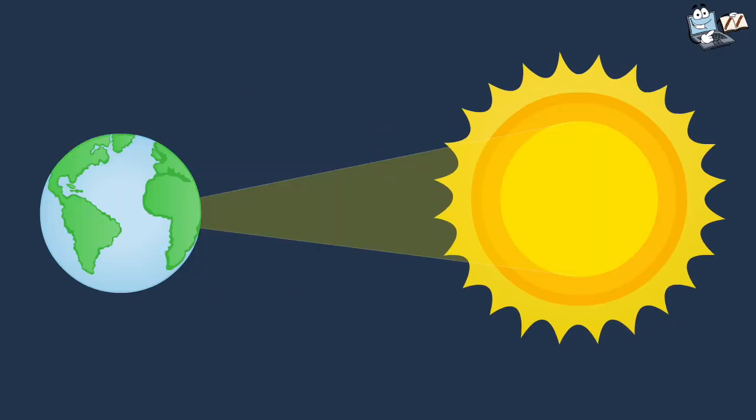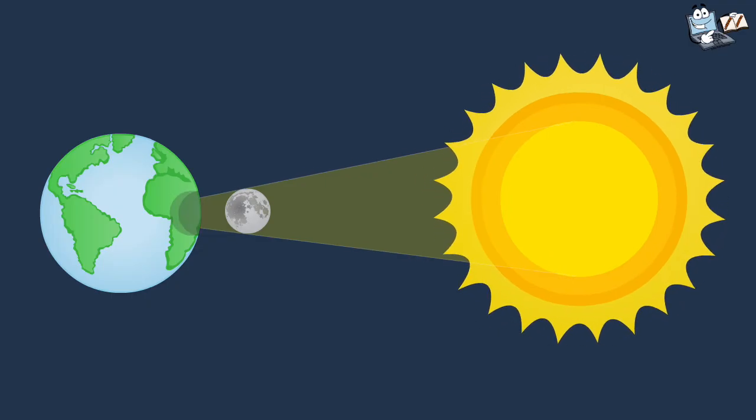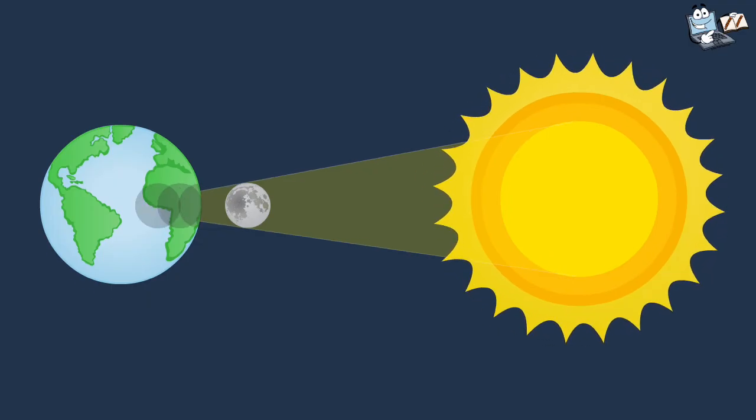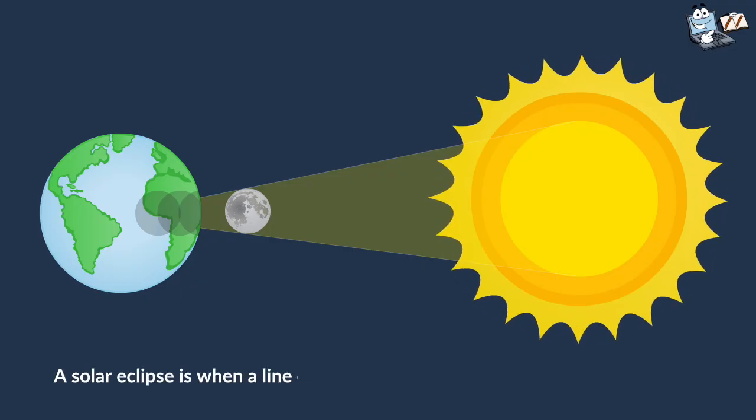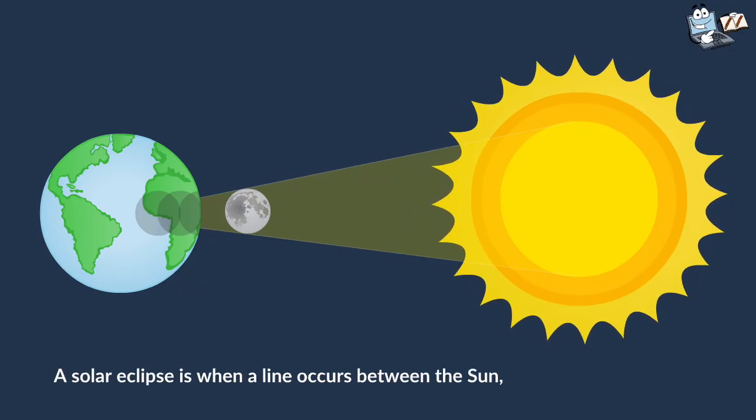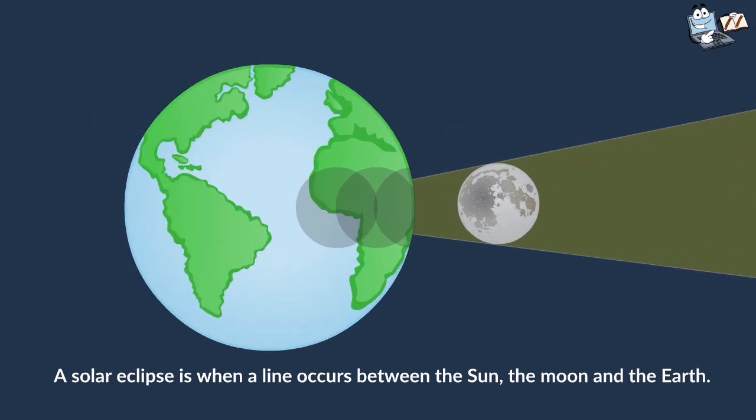Solar eclipse happens when the moon comes in front of the sun and thus causes a shadow to fall on some parts of our Earth. In other words, a solar eclipse is when a line occurs between the sun, the moon, and our Earth. The moon covers or blocks a part of the sun's light and it creates a large shadow on the Earth.